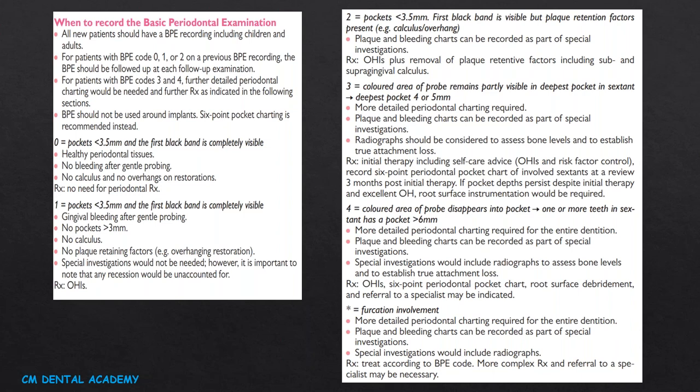Score 2 is when pockets are less than 3.5 mm but plaque retention factors are present such as calculus or overhanging restorations. Score 3 is when the colored area of the probe remains partly visible in the deepest pocket in the sextant. Score 4 is when the colored area disappears into the pocket — one or more teeth in the sextant has a pocket more than 6 mm. For codes 3 and 4, more detailed periodontal charting, plaque and bleeding charts, and radiographs are required as special investigations, and more complex treatment or specialist referral may be necessary.